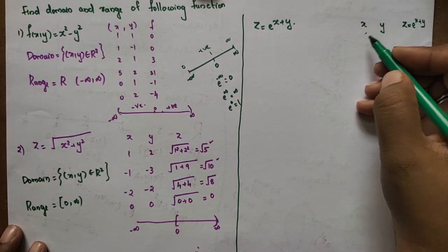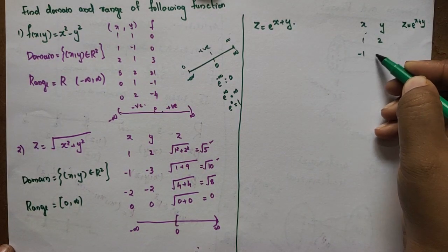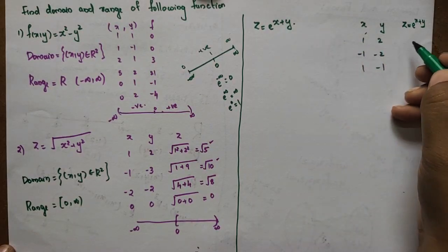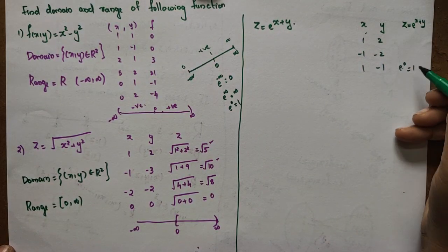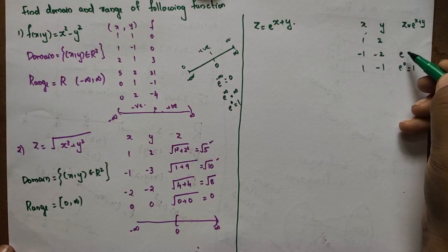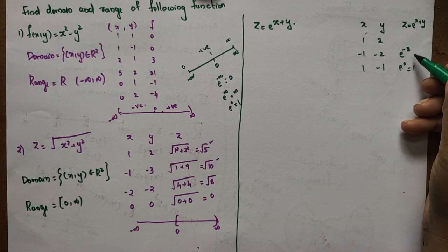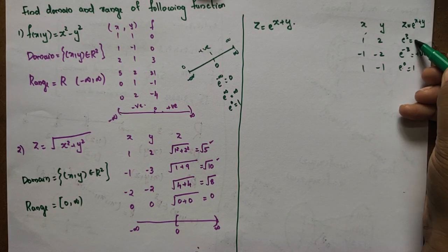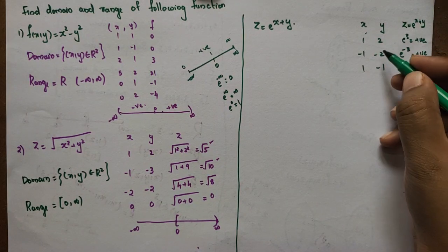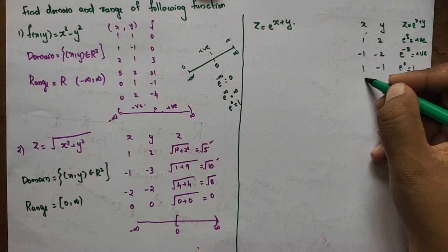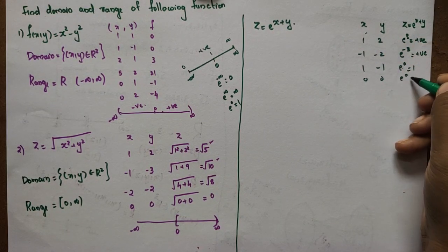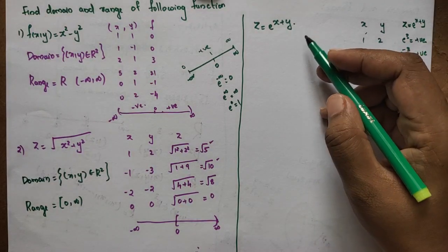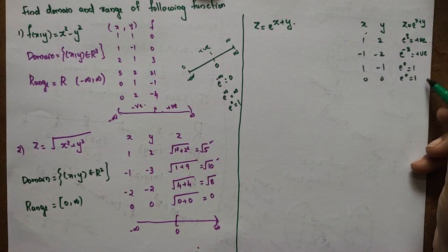For example, if we write x=1, y=-1, so x+y=0, then e raised to 0 is 1. If x+y is -3, e raised to -3 is a small positive value — never negative. So using any values on the xy-plane, the output is always positive.